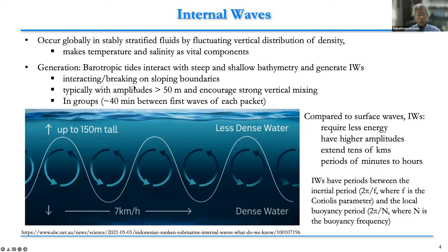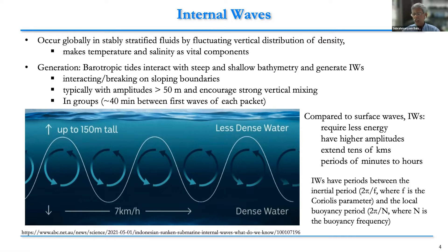The generation mechanisms involve barotropic tides interacting with steep and shallow bathymetry and with sloping boundaries. Typically, we look at amplitudes greater than 50 meters and strong vertical mixing. Sometimes we see groups with 40-minute intervals between the first wave of each packet. Compared to surface waves, internal waves require less energy, have higher amplitudes, wavelengths of tens of kilometers, and periods of minutes to hours.